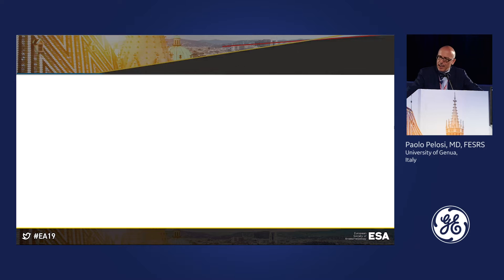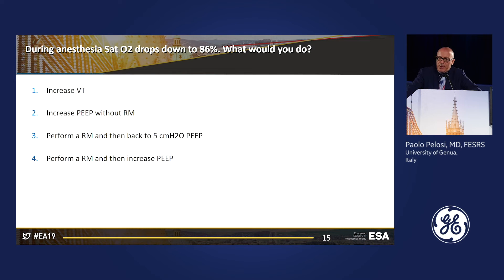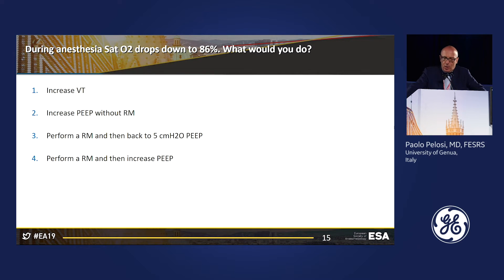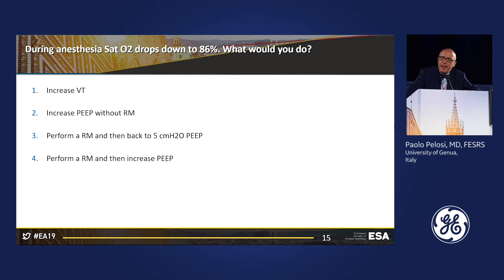Question two: during the procedure, saturation drops down to 86. What would you do? A: increase the tidal volume; B: increase PEEP without a recruitment maneuver; C: perform a recruitment maneuver and then return to the initial PEEP of 5 cmH2O; or D: perform a recruitment maneuver and then increase the PEEP. Please vote.